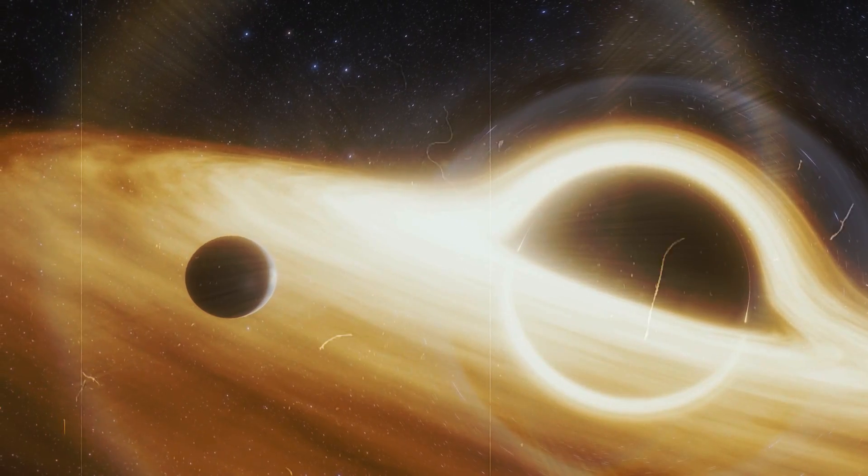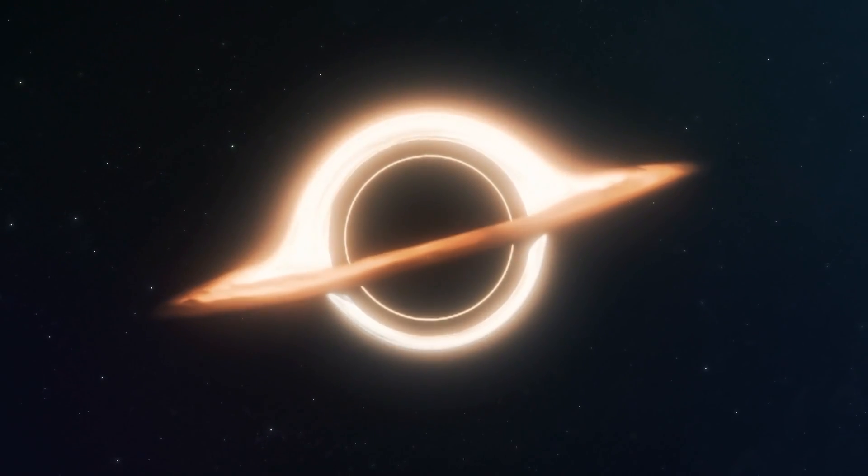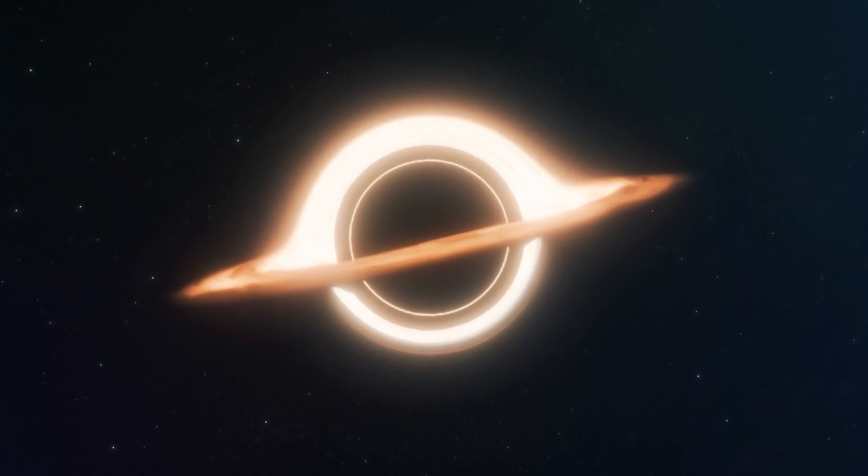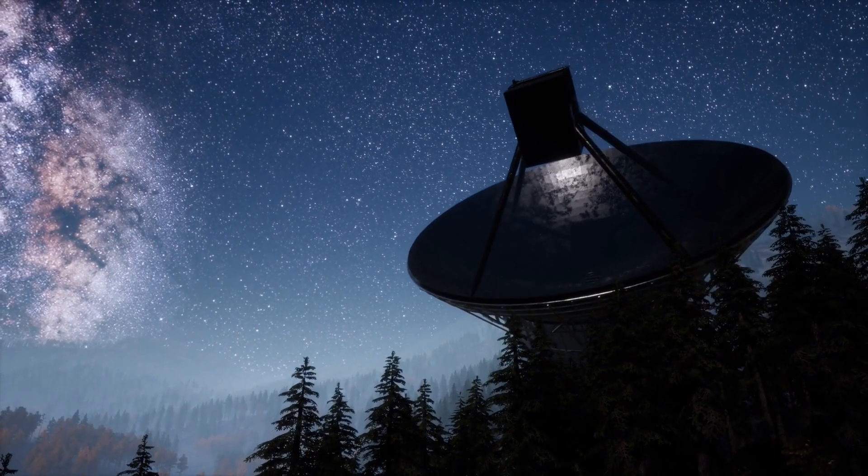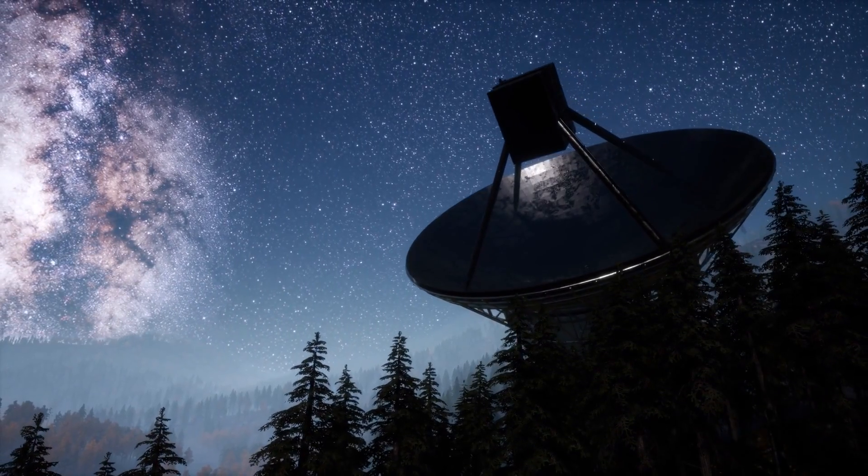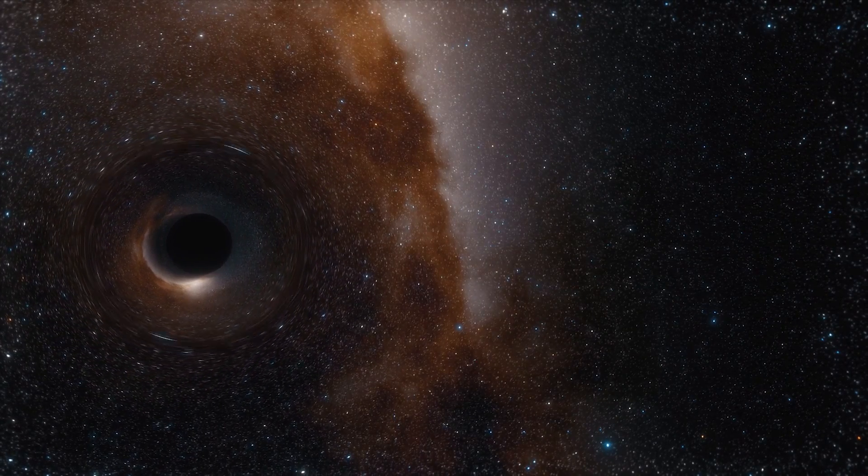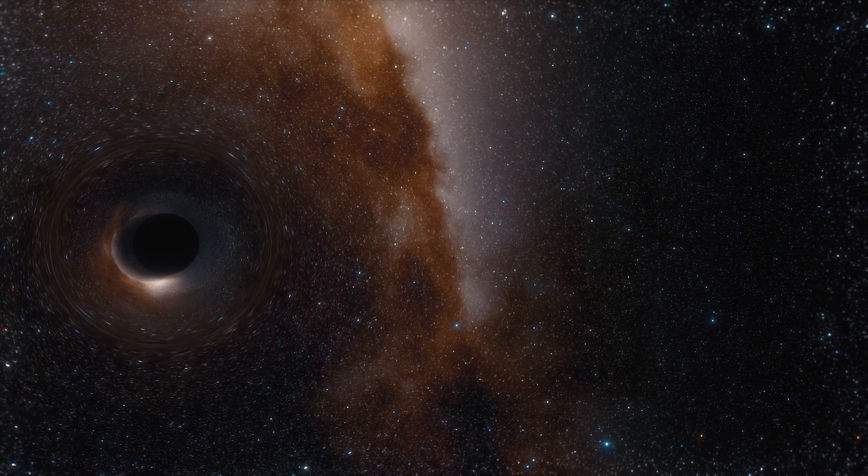The closest known black hole is called V616 Monocerotis and is about 3,000 light years away from us. That's reassuring. But there's another small catch. We are far from knowing all the black holes, and there are even some that roam freely in the galaxy. That sounds crazy.